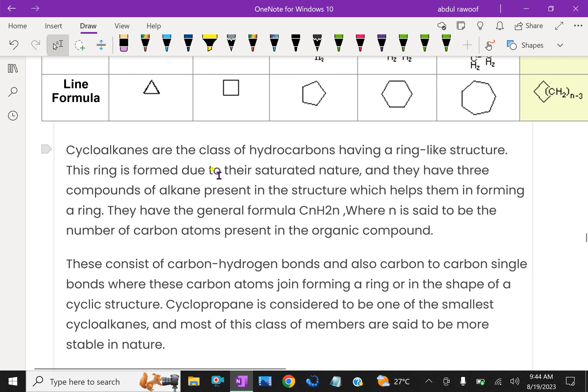Now, cycloalkanes are the class of hydrocarbons having a ring-like structure. This ring is formed due to their saturated nature, and they have three compounds of alkane present in the structure which help them in forming a ring. They have the general formula CnH2n, where n is said to be the number of carbon atoms present in the organic compounds.